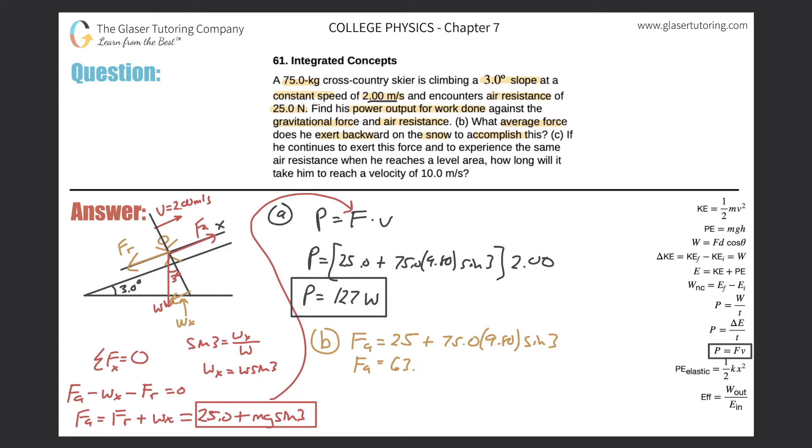So we get 63.5. So 63.5. The decimal doesn't look so clear there. 63.5. And that is in terms of now Newtons, since it's force. So that takes care of letter B.